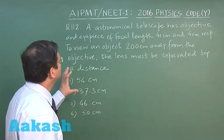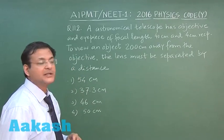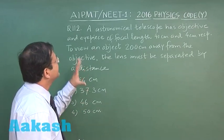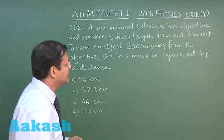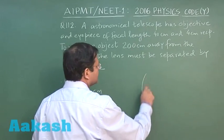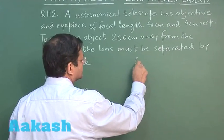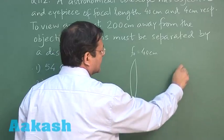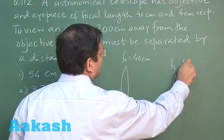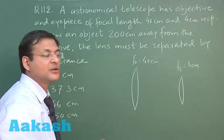Now in this question 112, which is based on astronomical telescope, it says that it has an objective and eyepiece of focal length 40 and 4 centimeter respectively. So let us suppose it has an objective of 40 centimeter and eyepiece of 4 centimeter. This is what is given to you.